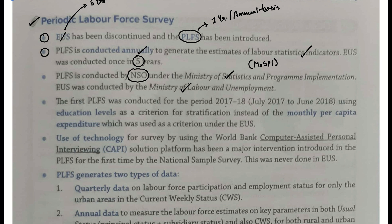Bhale yeh discontinue ho gaya dosto, lekin Employment Unemployment Survey plus Periodic Labor Force Survey — inki do, ya phir chaar statements alag-alag form mein aapko prelims mein dekhne ko mil sakti hain. Examiner aapko galat karwa sakta hai, trap bicha sakta hai — ministry ke andar upar neeche kar dega dono ki dono ministry ko. Yeh saal bhi badal sakta hai — ki Employment Unemployment Survey har 2 saal mein ek baar conduct hota tha aur PLFS har ek saal mein conduct hota hai. Aise karte chaar statement aa sakti hain — one only, one and three only, three and four only, none of the above, all of the above.